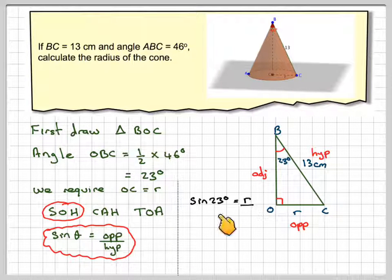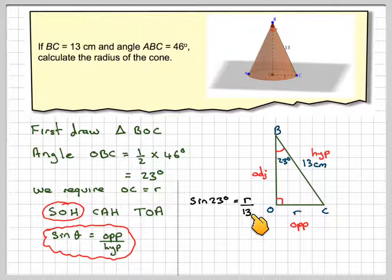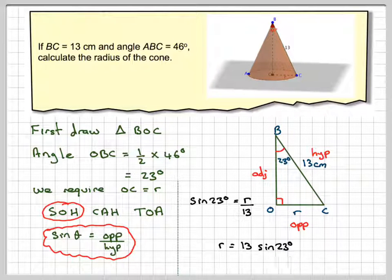And then we're going to have the sine of 23 degrees. It's going to be r, opposite side, over the hypotenuse, which is 13. And then because we've got divide by 13, r is going to be 13 times sine 23.